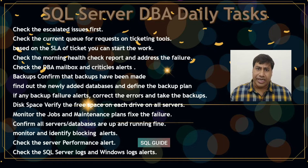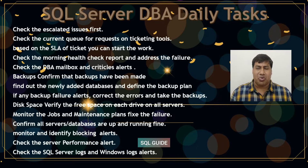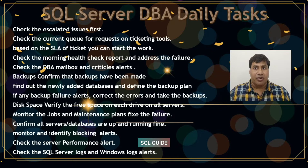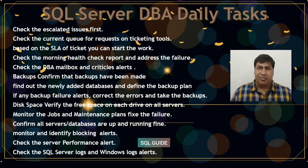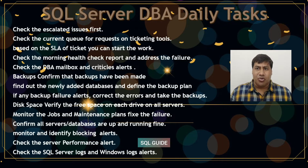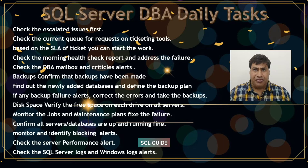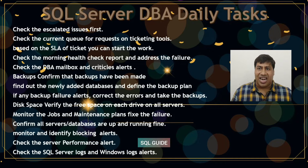For daily tasks: first, check escalated issues. Check the current queue for requests on a ticketing tool and based on the SLA of a ticket, start the work. Check the morning health check report and address any failures. Check the DBA mailbox and critical alerts. Confirm that backups have been made.